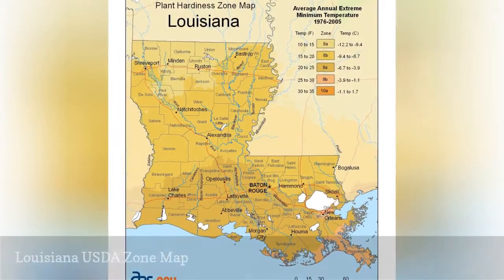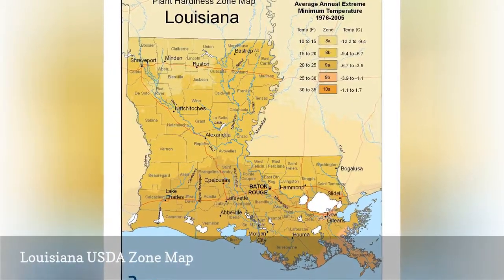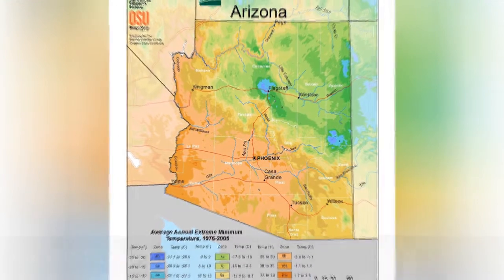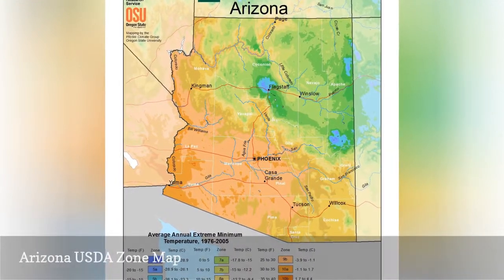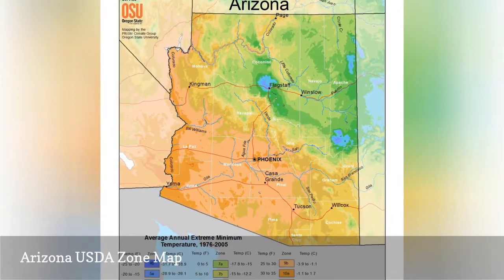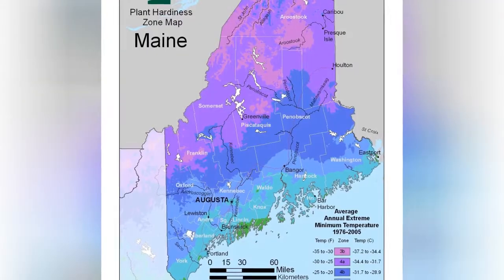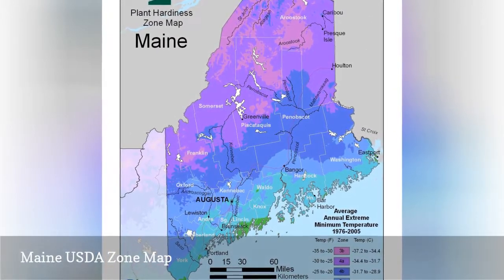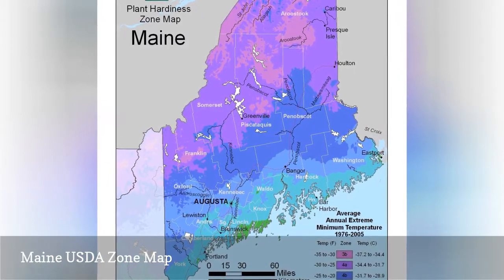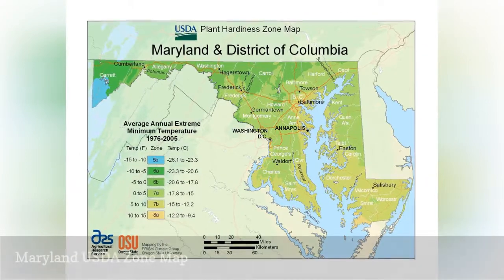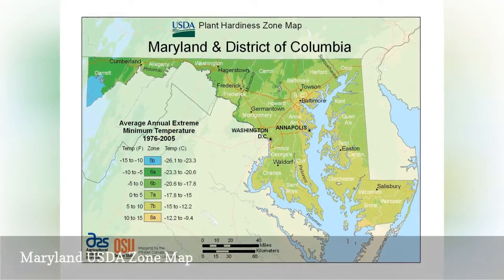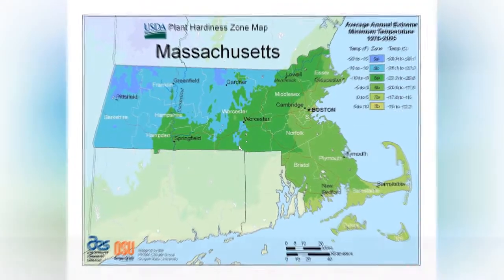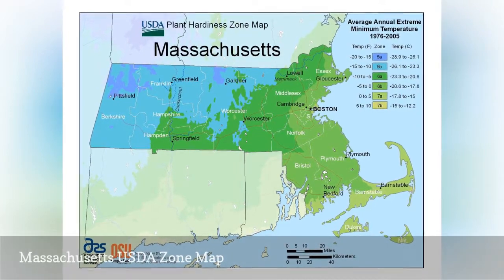USDA zones 8A through 10A are represented in Louisiana. USDA zones 4B through 10B are represented in Arizona. USDA zones 3B through 6A are represented in Maine. USDA zones 5B through 8A are represented in Maryland. USDA zones 5A through 7B are represented in Massachusetts.